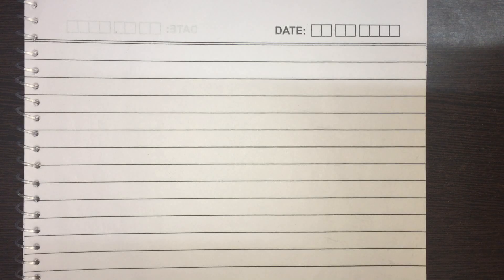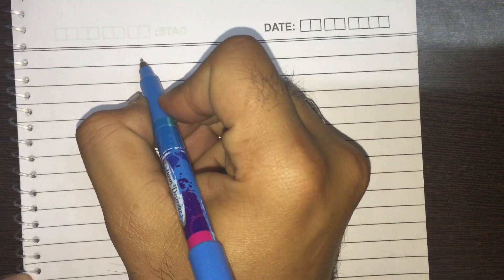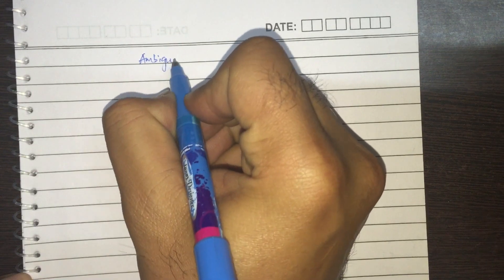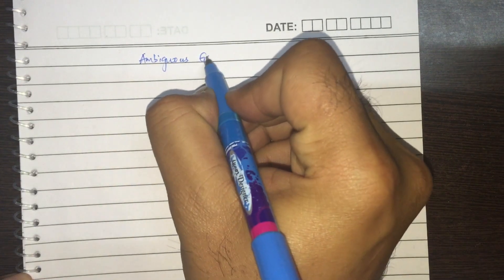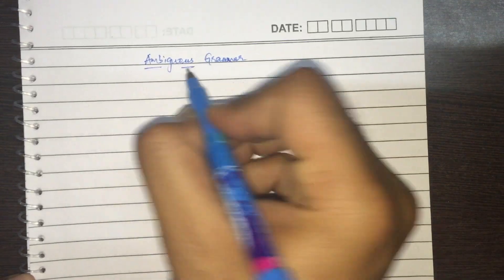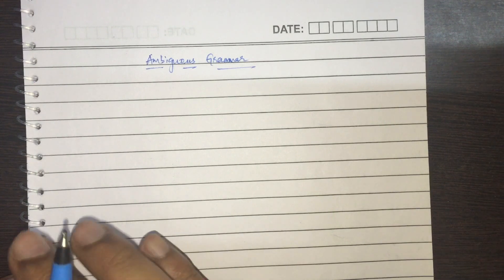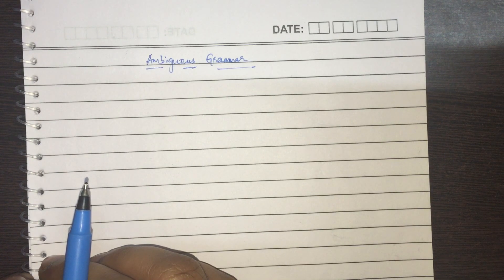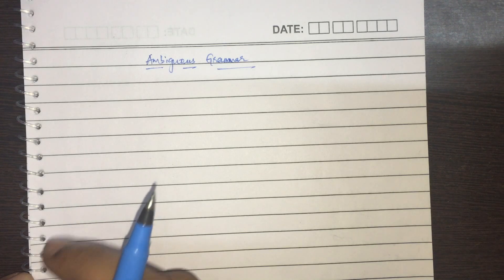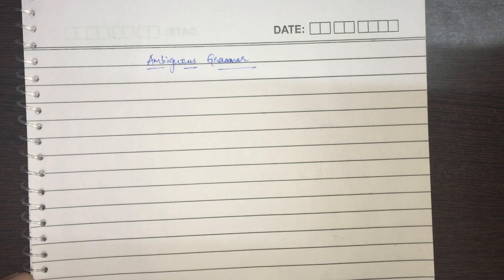Hello, I'm going to explain what is an ambiguous grammar. Ambiguous grammar is very simple. So if there are two or more parse trees for a given string, that resulting string, then we call it as an ambiguous grammar.